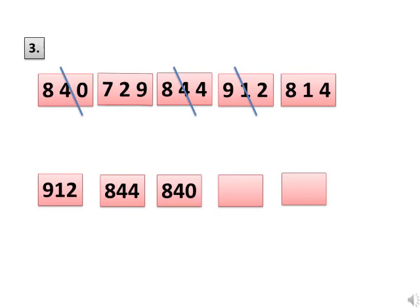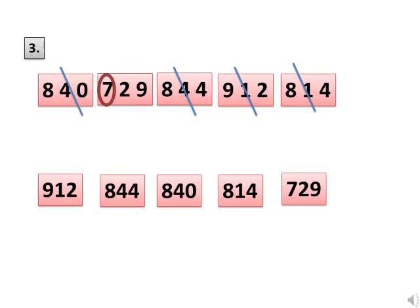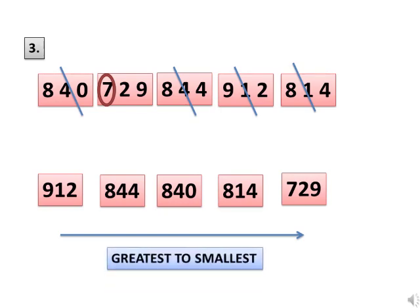Now we have 729 and 814. To find out the next number, we will compare the hundreds place digit of these 2 numbers. In 729 it is 7 and in 814 it is 8. 8 is greater than 7, so the number 814 is greater. We will write 814 in the fourth box and cross it. Now 729 is left, which is the smallest number. We will write it in the last box. Thus numbers are arranged in descending order, that is from greatest to the smallest. 912 is the greatest number and 729 is the smallest number.